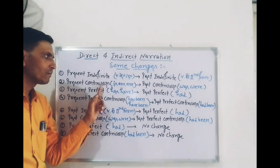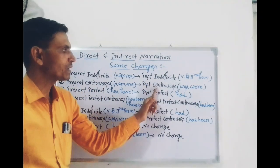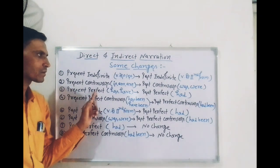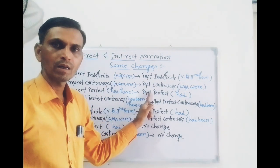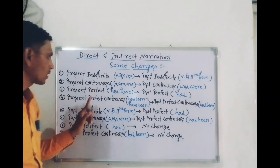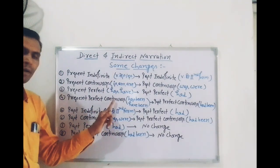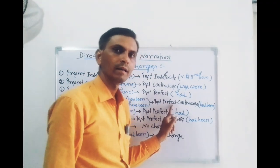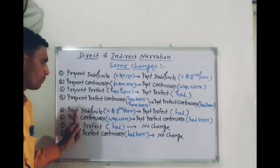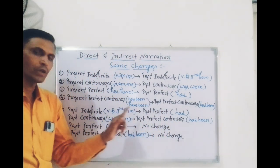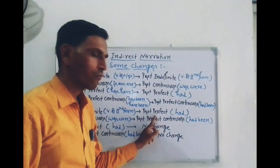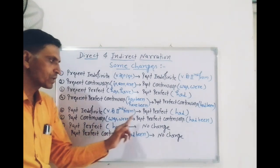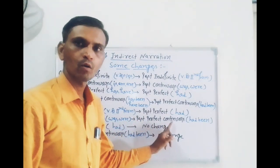दूसरा, Present Continuous — change होता है Past Continuous में। तीसरा, Present Perfect — change होता है Past Perfect में। चौथा, Present Perfect Continuous — change होता है Past Perfect Continuous में। पाँचवाँ, Past Indefinite — change होता है Past Perfect में। छठा, Past Continuous — change होता है Past Perfect Continuous में।